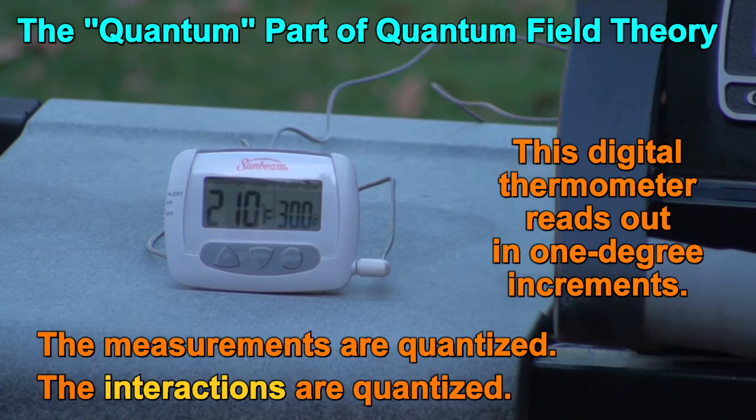When fields interact, integer numbers of field quanta are created and annihilated. It's like nature only uses digital thermometers.